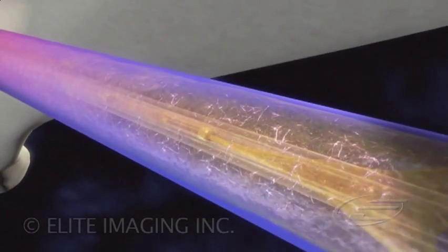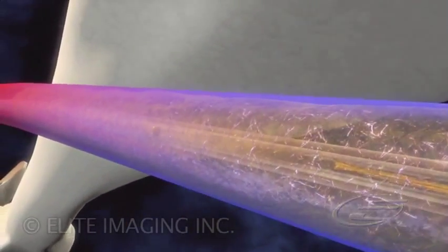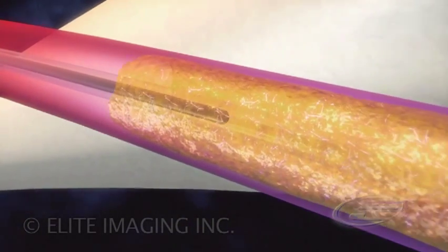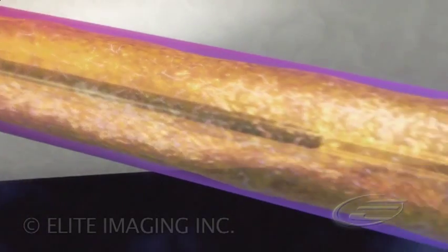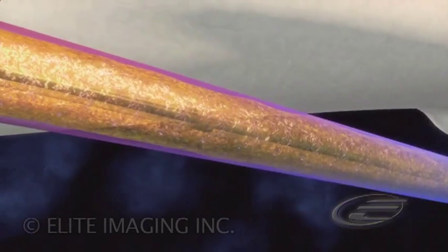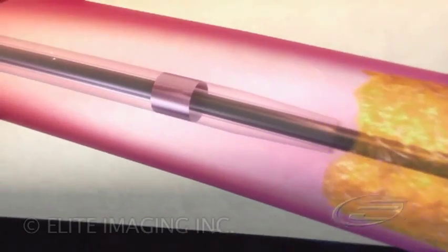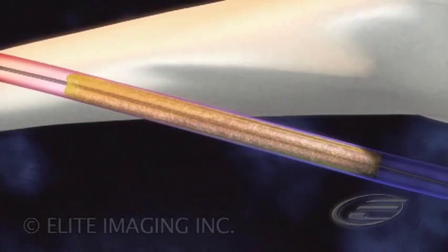When thrombolytic therapy is complete, the ultrasound core is removed and the guide wire placed back through the drug delivery catheter. The catheter is removed, leaving the guide wire in place, providing access for definitive treatment of the underlying disease.